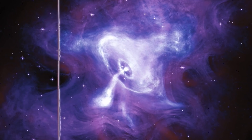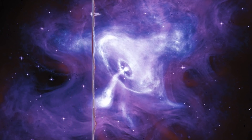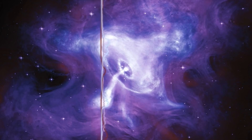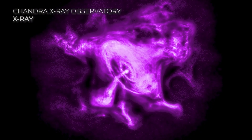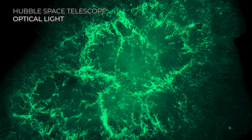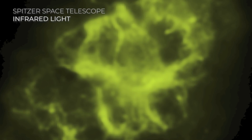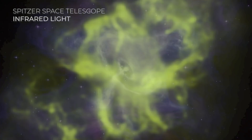So for this piece, we wanted to be able to hear those individual things. The X-rays from Chandra are like a harsh brass sound, and the optical light from the Hubble Space Telescope would be like the lighter strings, and the infrared data from Spitzer, which is the lowest-energy material, is like a soft woodwinds type of sound.